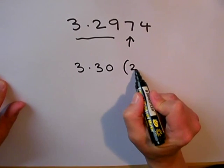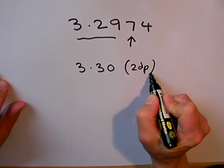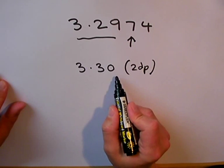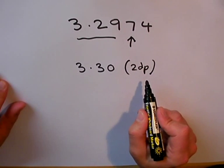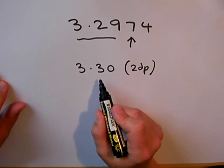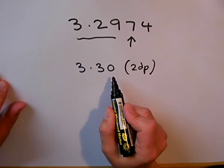Because I've rounded it off to two decimal places, I need to put 2dp afterwards. You may be tempted to just put 3.3 and not the zero, but because we've rounded it off to two decimal places, it's important you put two decimal places, even though it's a zero in this case.